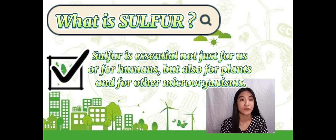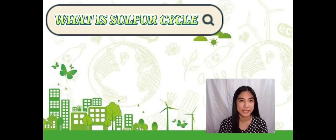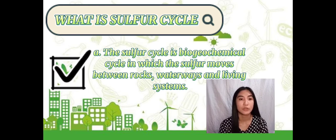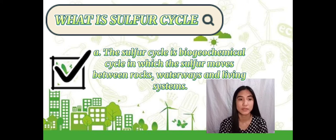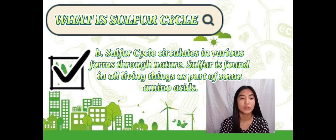Sulfur is essential not just for us or the humans but also for plants and other microorganisms. So now, what is the sulfur cycle? The sulfur cycle is a biogeochemical cycle in which sulfur moves between rocks, water, waste and living systems. Sulfur cycle circulates in various forms through nature. Sulfur is found in all living things as part of some amino acids. So the sulfur cycle describes the movement of sulfur through the geosphere and the biosphere.